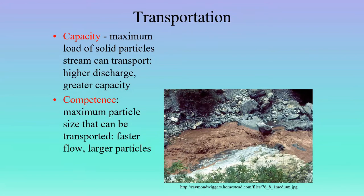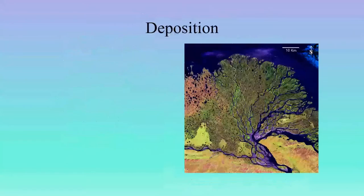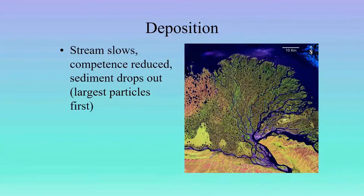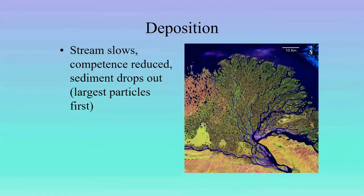We also talked about competence, which is the maximum size particle that can be transported. The faster the flow, the larger the particles — so competence is directly related to the velocity of the stream. On the other end of things, we have deposition. As the stream slows, its competence is reduced, so larger sediments start to drop out — the bigger ones first. As competence gets less and less, you start to filter out smaller and smaller particles.